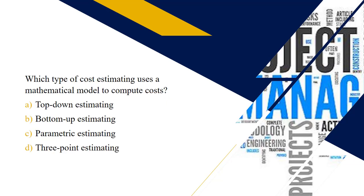Next question: which type of cost estimating uses a mathematical model to compute the costs? The answer is choice C — parametric estimating. Parametric estimating often uses a quantity of work multiplied by the rate formula for computing costs.